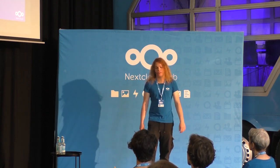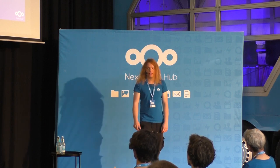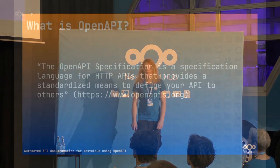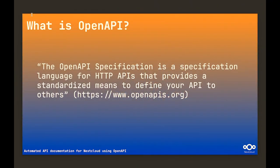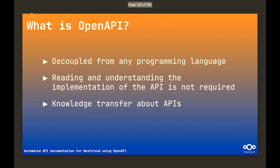You might not even know what OpenAPI is. The OpenAPI website says the OpenAPI specification is the specification language for HTTP APIs that provides a standardized means to define your API to others. It means you can document your API in a way that is decoupled from any programming language. You don't need to read and understand the implementation of the API. It includes common concepts and patterns used in HTTP APIs and makes it possible to transfer knowledge about your API.